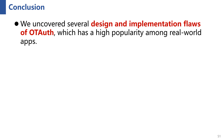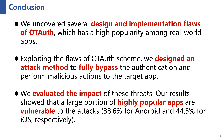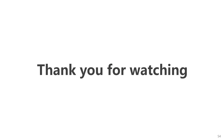In conclusion, in this work we uncovered several design and implementation flaws of One-Type Authentication, which has large usage and high popularity among real-world apps on mobile platforms. Exploiting these flaws, we designed an attack method to fully bypass the authentication and perform malicious actions on the target app. We performed a large-scale measurement to evaluate the impact of these threats, using a pipeline integrating both static and dynamic approaches to detect potentially affected apps. We confirmed that about 40% of highly popular apps are vulnerable to the attack. Thank you for watching.